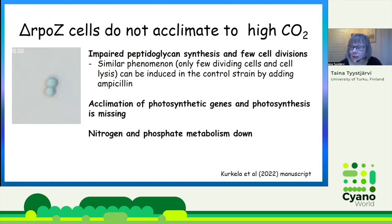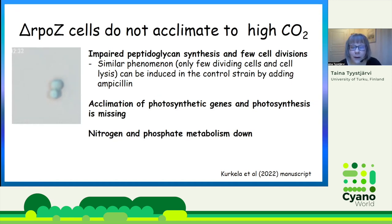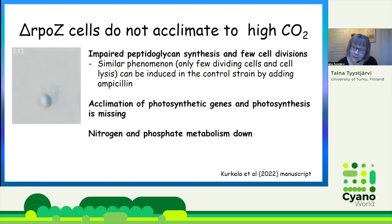We can actually mimic this phenomenon by adding ampicillin to a normal control cell culture in ambient air. If we add ampicillin, there are only a few dividing cells and those cells that do divide explode. We think that if the peptidoglycan layer is not forming properly, cells simply take in too much water and because of that they explode. So, Delta-RPOZ cells do not acclimate to high CO2 because they do not synthesize a proper peptidoglycan layer.